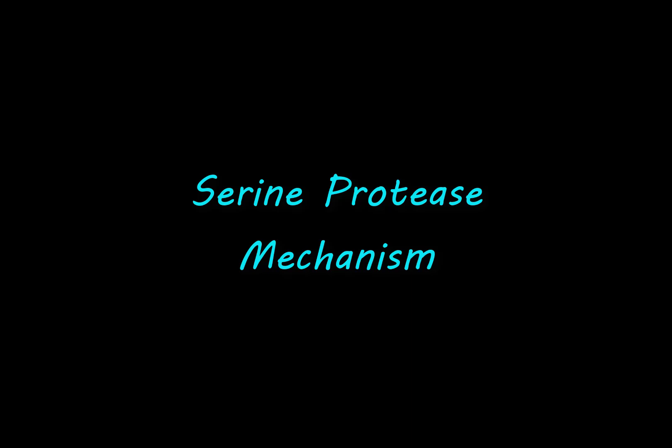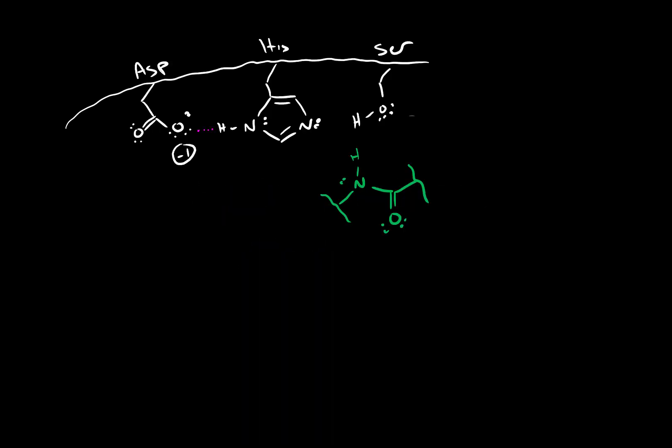In the previous video, we introduced one enzyme-catalyzed mechanism that can facilitate the hydrolysis of a peptide backbone. In this video, we're going to see another way that a different class of enzymes can do this. This class of enzymes are known as serine proteases. They're known as serine proteases because there's a really important serine in the active site that plays an absolutely essential role in the catalytic mechanism.